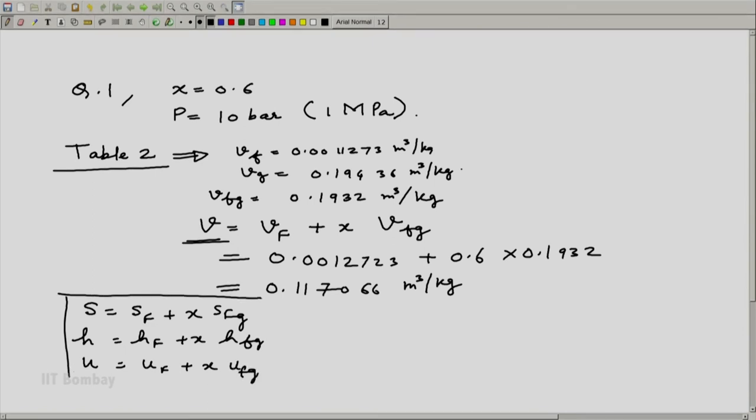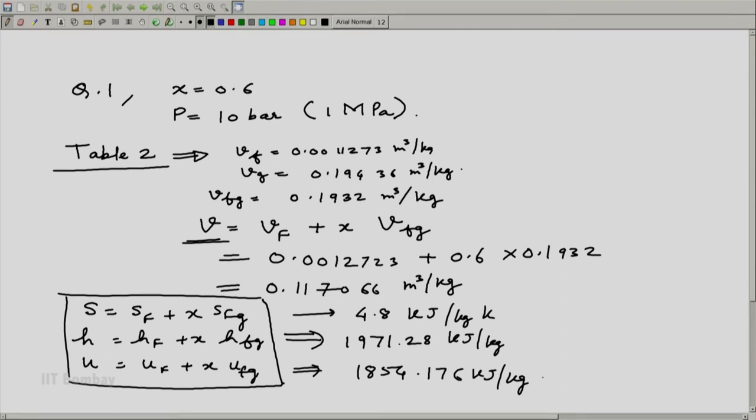I will get all these values from table 2 for Uf and UfG and get that S = 4.8 kJ/kg·K, H = 1971.28 kJ/kg and U = 1854.176 kJ/kg and the mass that was given to us was 1 kg.